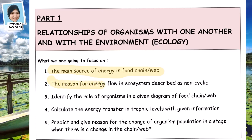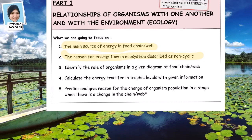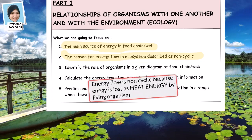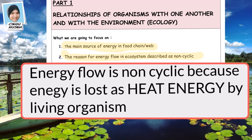The reason for energy flow in an ecosystem being described as non-cyclic is that energy is lost as heat by living organisms. The heat released by organisms will not be recycled back to the sun.